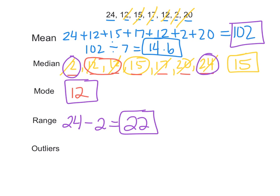And then finally, the outliers — outliers are numbers that are way bigger or smaller than the other numbers. In this data set, 2 is like 11 away from 12, whereas 24 is only 4 away from 20. So if we were going to say we had an outlier, I would say 2 is the outlier, although it's not a drastic outlier, but it's definitely a little outside the range of these other numbers.